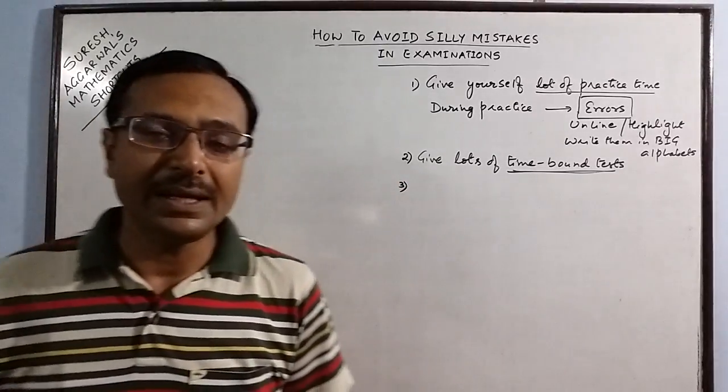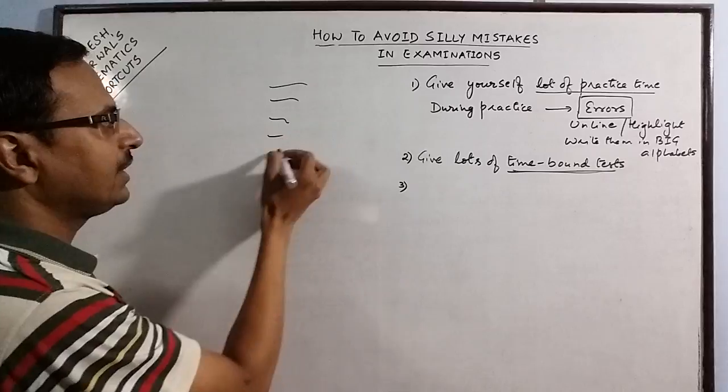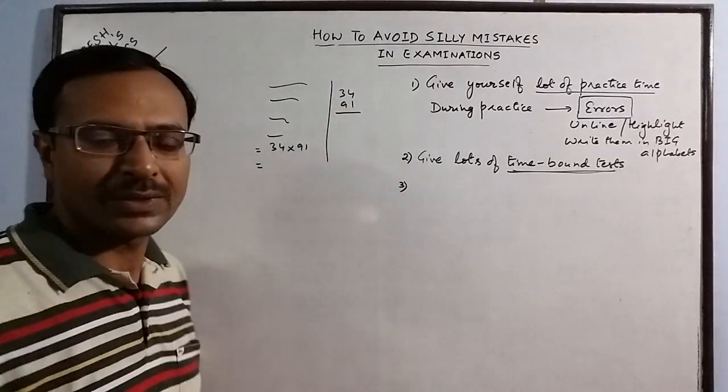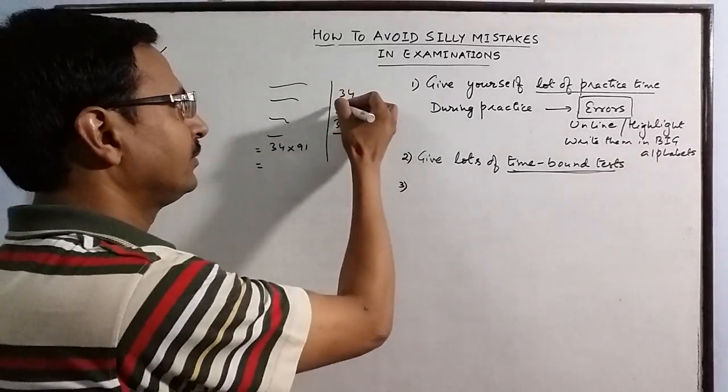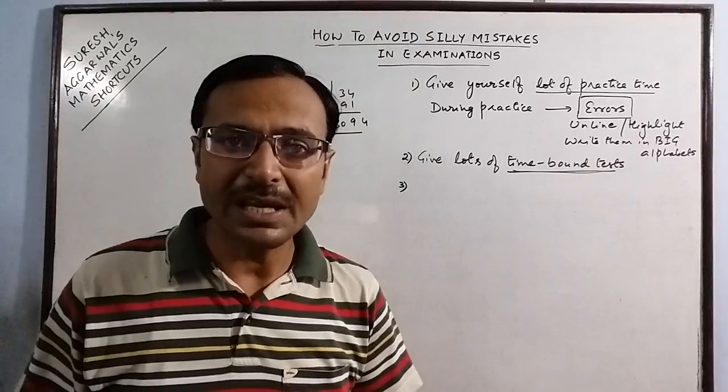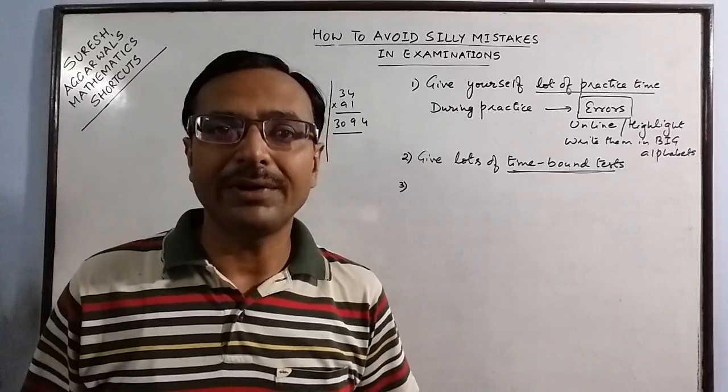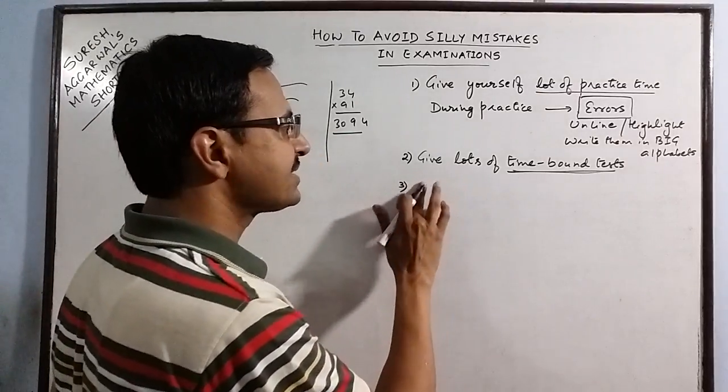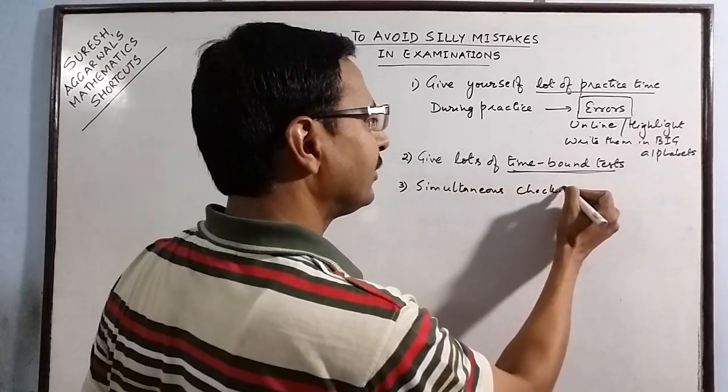The third and very important point is while attempting the question paper, suppose you are writing the steps like this and finally you get 34 into 91 as the answer. So what you do is in the margin you calculate this 34 into 91. So whenever you calculate this in rough, this is a product you cannot afford to check the whole paper at the end of the paper in the last 10 minutes. It is impractical. Anyone who suggests you to check your paper at the end is not telling you the right way of attempting the paper.